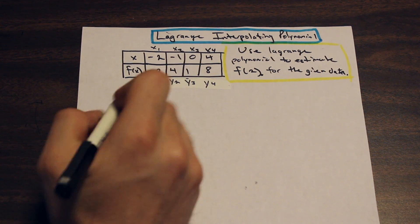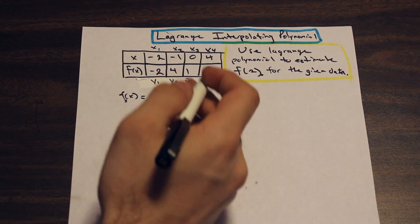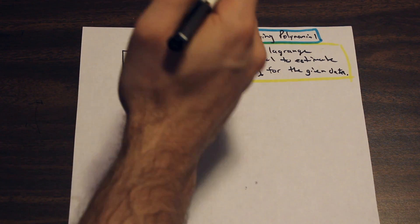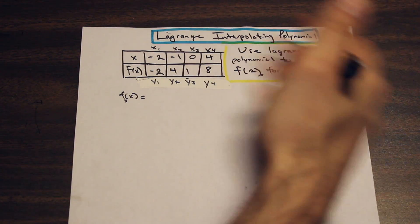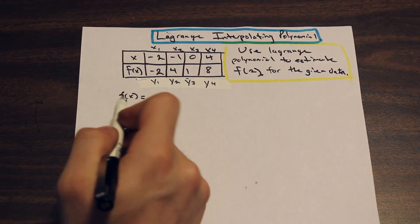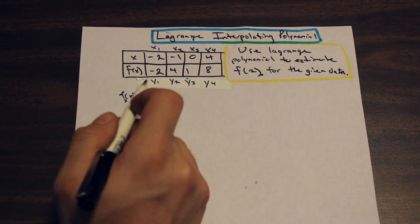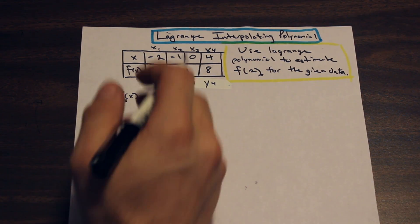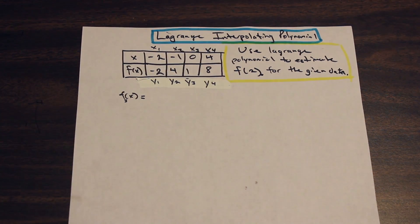Since we have four data points, we're going to write f sub 3. If we had five points — x1, x2, x3, x4, x5 with corresponding y values — we'd write f sub 4 of x. With four data points we're going to end up with four terms.